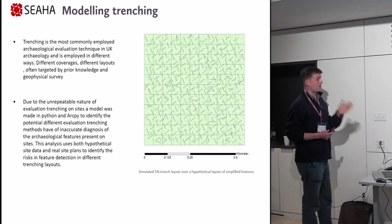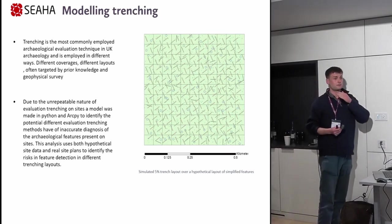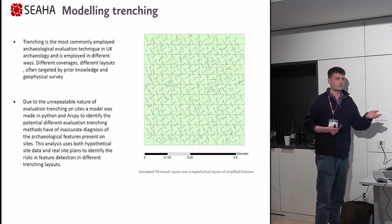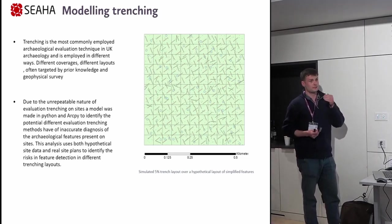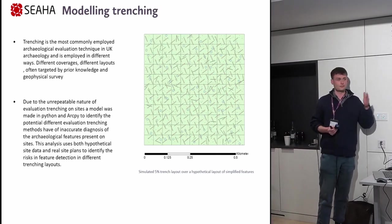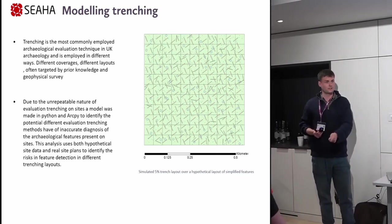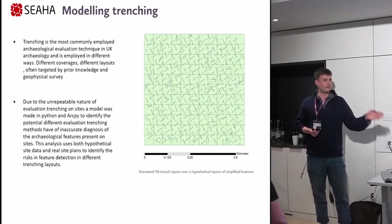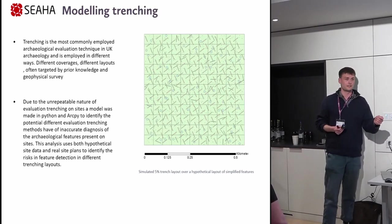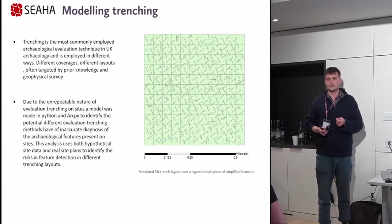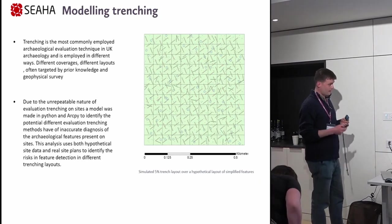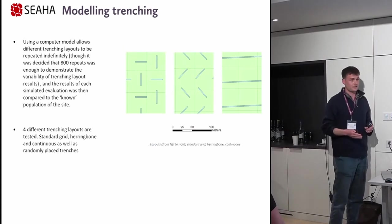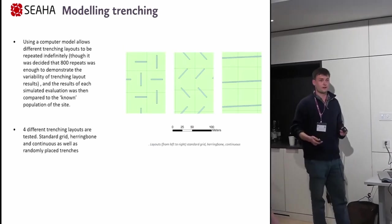One of the big things about archaeological evaluation is that it only happens once or in HS2's case twice. Previous studies interpreting how effective evaluations are look at the evaluation data and then the subsequent mitigation data. We're able to look at how well the evaluation predicted the mitigation, but we're not able to see how well the evaluation missed the thing we missed. So what I did is I created a very basic model where we look at different trenching layouts at different percentages over hypothetical archaeological sites.